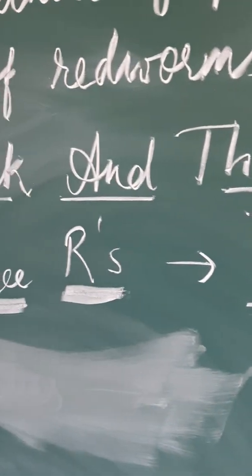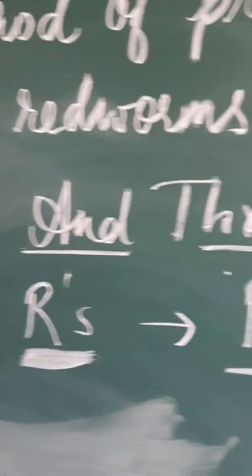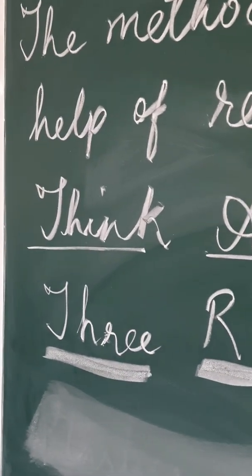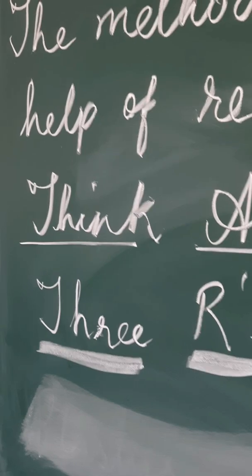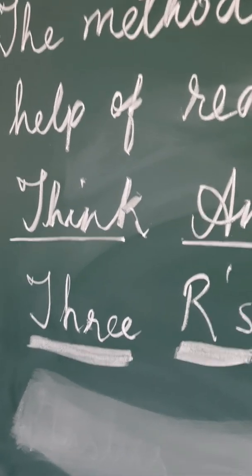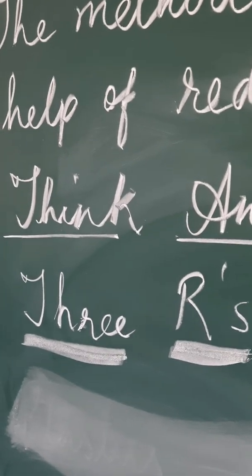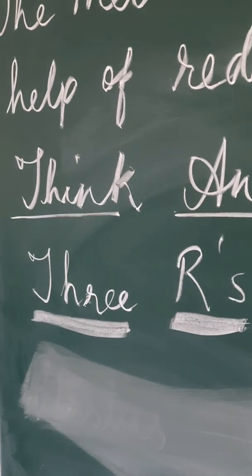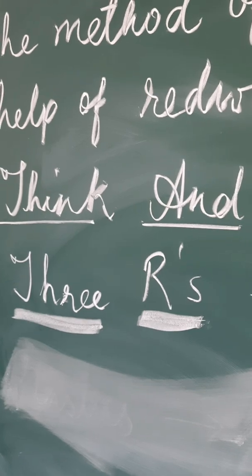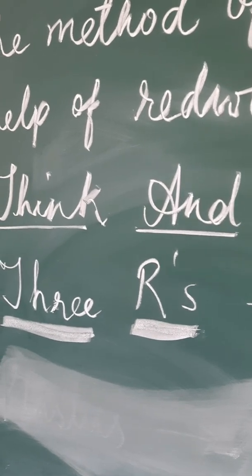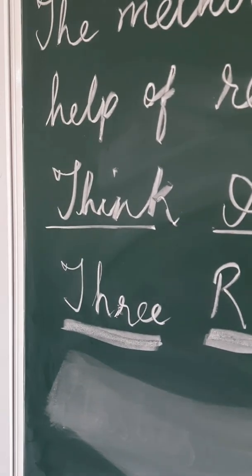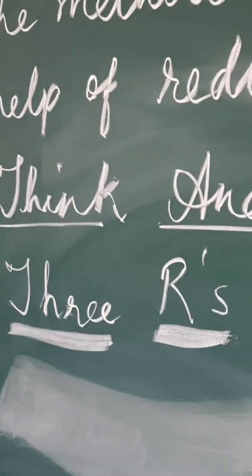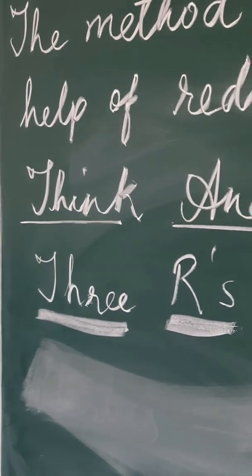The three R's apply to Think and Throw. For example, if you have paper things at home, think whether this paper should be thrown in the dustbin or can it be recycled — papers can be recycled. If you have thermocol materials, think and throw — thermocol can be reused but thermocol cannot be recycled. So thermocol can be reused; you can cut it and make something else.